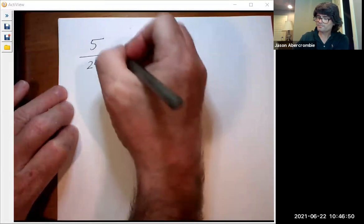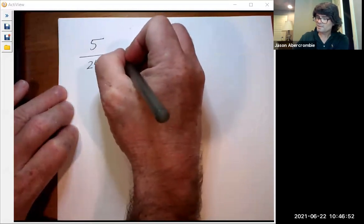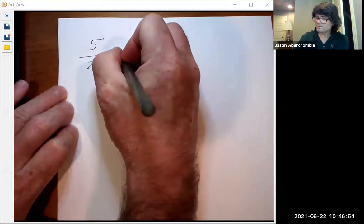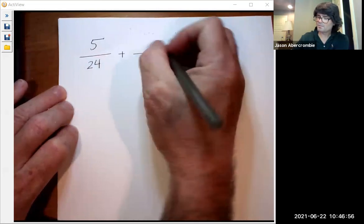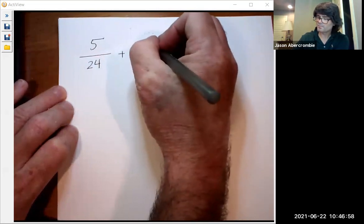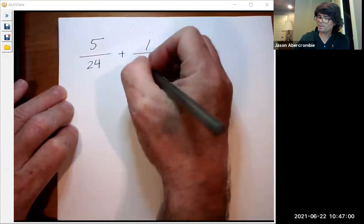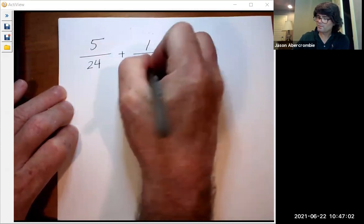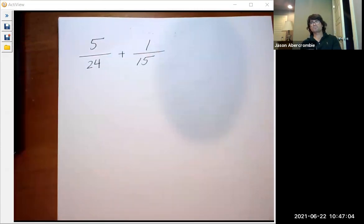So 5 over 24 and then plus 1 over 15. So let's think this one through.